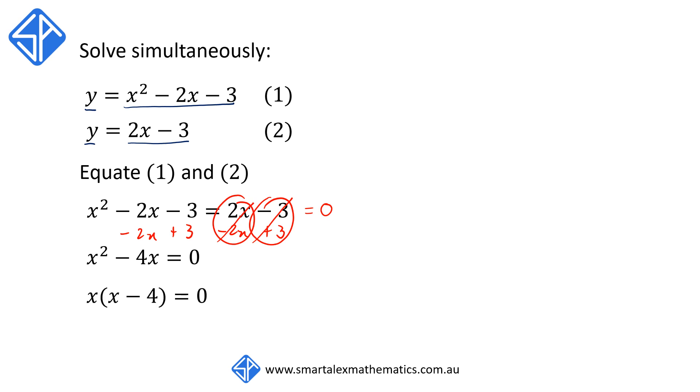To solve this, we're going to factorize out the x. So we have x times x minus 4 equals 0. Then using the null factor law, we can have either x equals 0 or x minus 4 equals 0. If x minus 4 equals 0, this means that x equals 4.